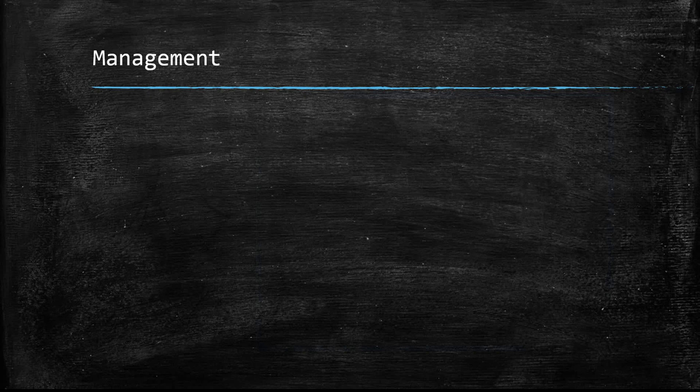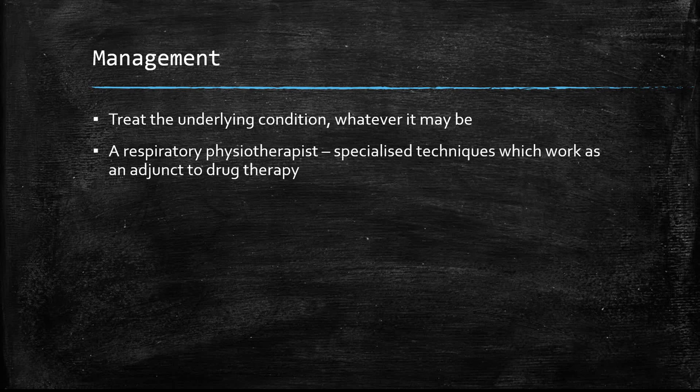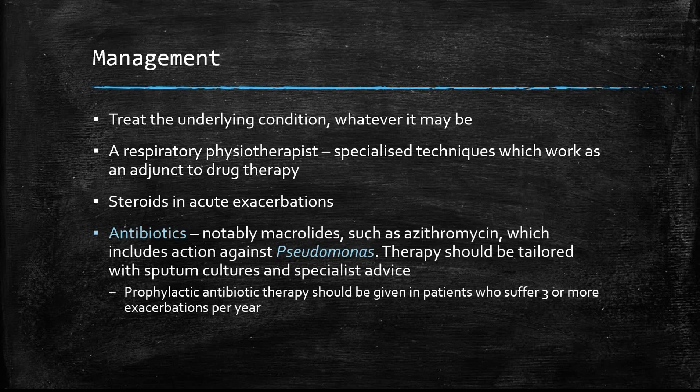How do we manage bronchiectasis? First, we treat the underlying condition, whatever it may be. A respiratory physiotherapist should get involved with the patient — they have specialised techniques which are really effective and work as an adjunct to drug therapy. In acute exacerbations, we use steroids and antibiotics, notably macrolides to fight against Pseudomonas, and specialist advice should be taken. Patients who suffer from frequent exacerbations per year should be provided with prophylactic antibiotic therapy.